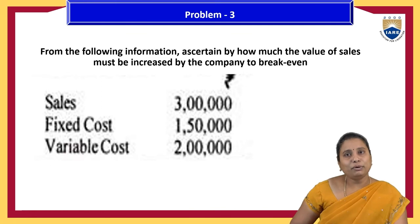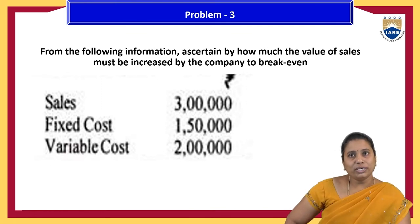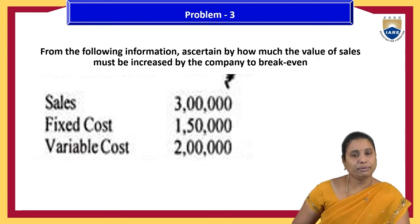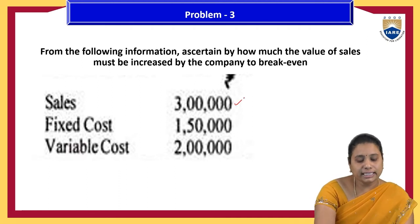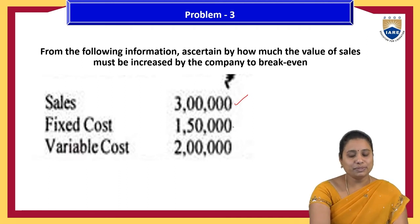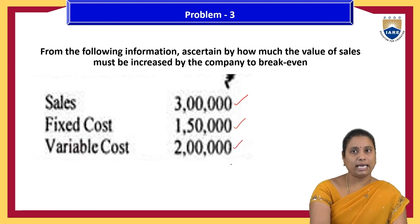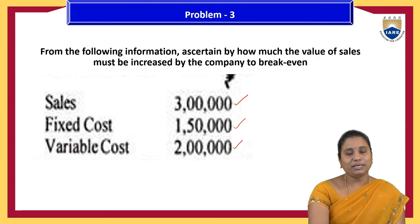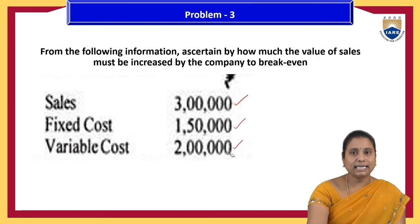Problem 3: From the following information, by how much must sales be increased to reach the break-even point? Given: sales = ₹3 lakhs, fixed expenses = ₹1,50,000, variable cost = ₹2 lakhs. What should be the sales to meet the break-even point in terms of sales?